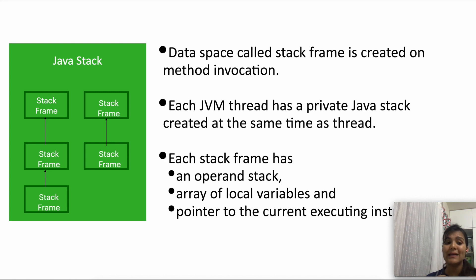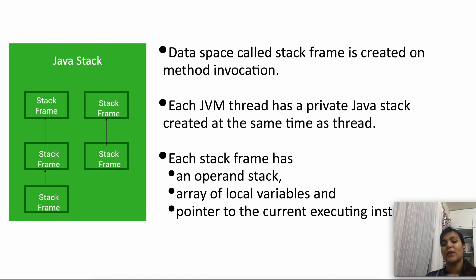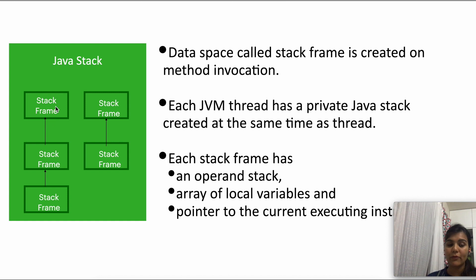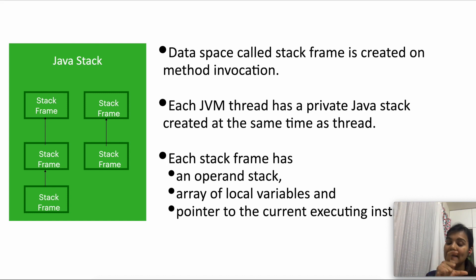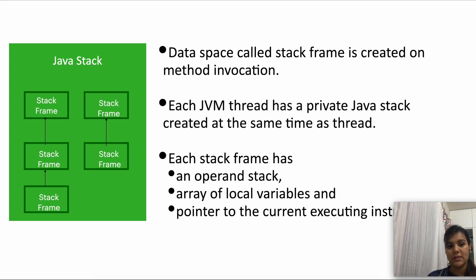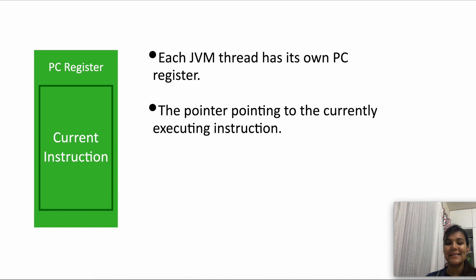The operand stack holds the operands and local variables of a method, and the pointer to the currently executing instruction is also in the stack frame. The top of the Java stack is always the currently executing stack frame — also known as the active stack frame. When another method gets called, a new stack frame gets added on top and that becomes the active stack frame. When the method returns, the stack frame disappears and the previous stack frame again becomes the active stack frame.